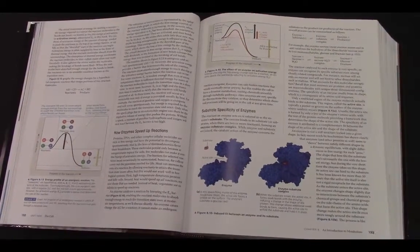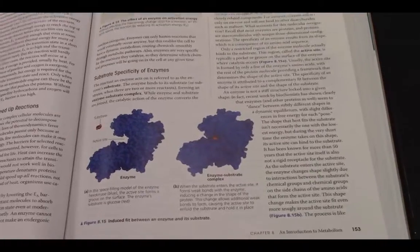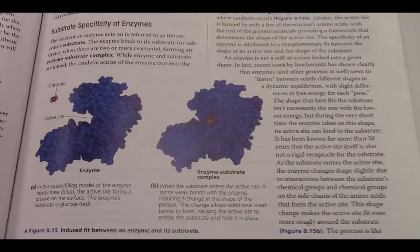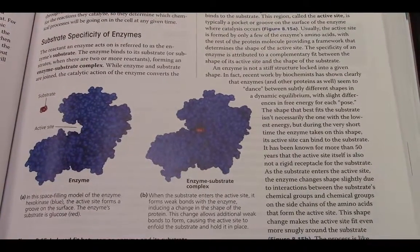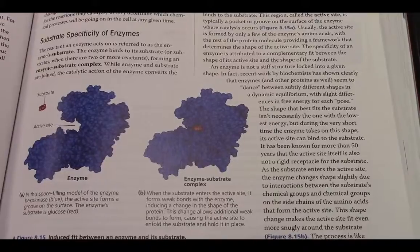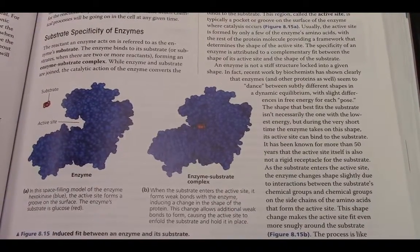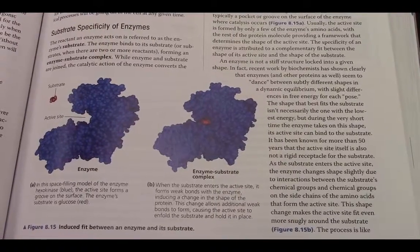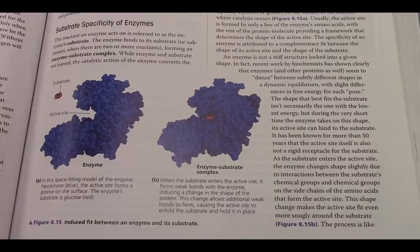One thing to keep in mind is that the enzyme is specific. Figure 8.15 really demonstrates how an enzyme has an active site, and due to both its three-dimensional shape and its charge, it's able to interact with a particular substrate and facilitate the reaction occurring in the cell, so it happens faster than it would on its own.